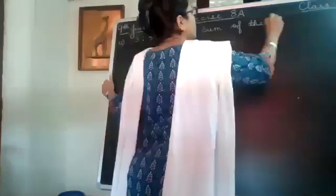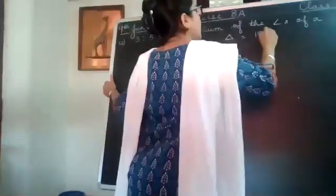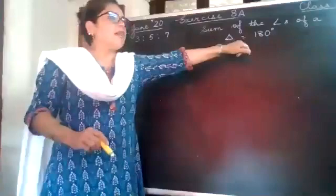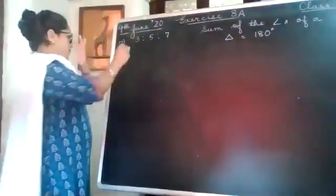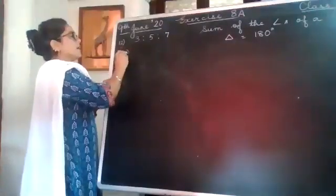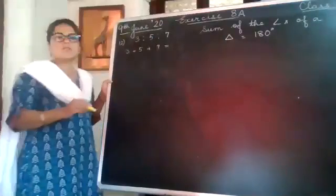The sum of angles of a triangle is always 180 degrees, so this 180 degrees is to be distributed in this ratio. Now, we have already learned how to find the fraction - we find the sum of all the ratios. 3 plus 5 plus 7 is 15, so the first angle will be